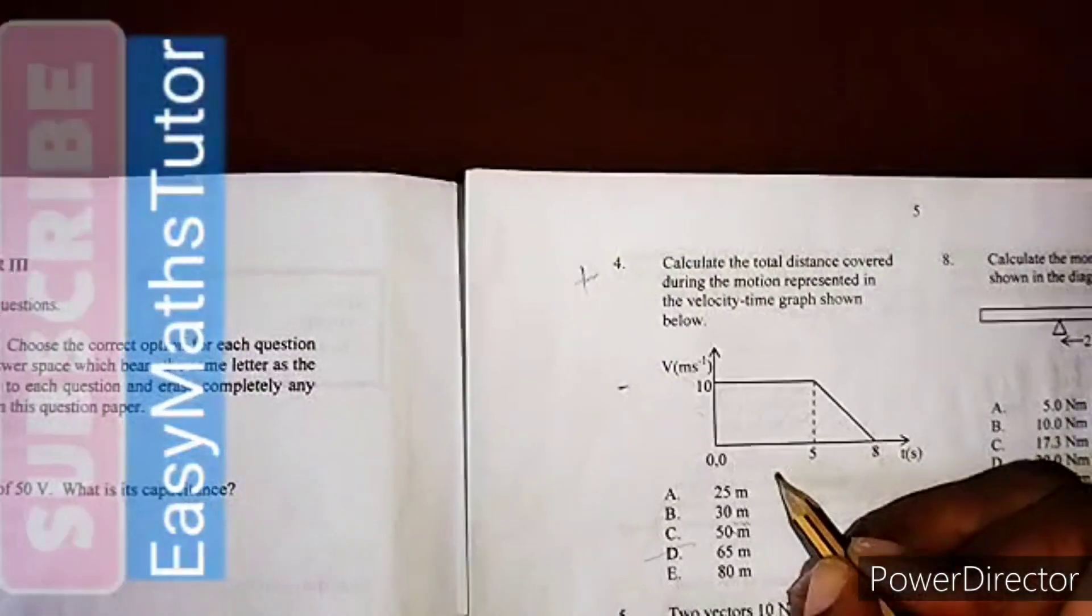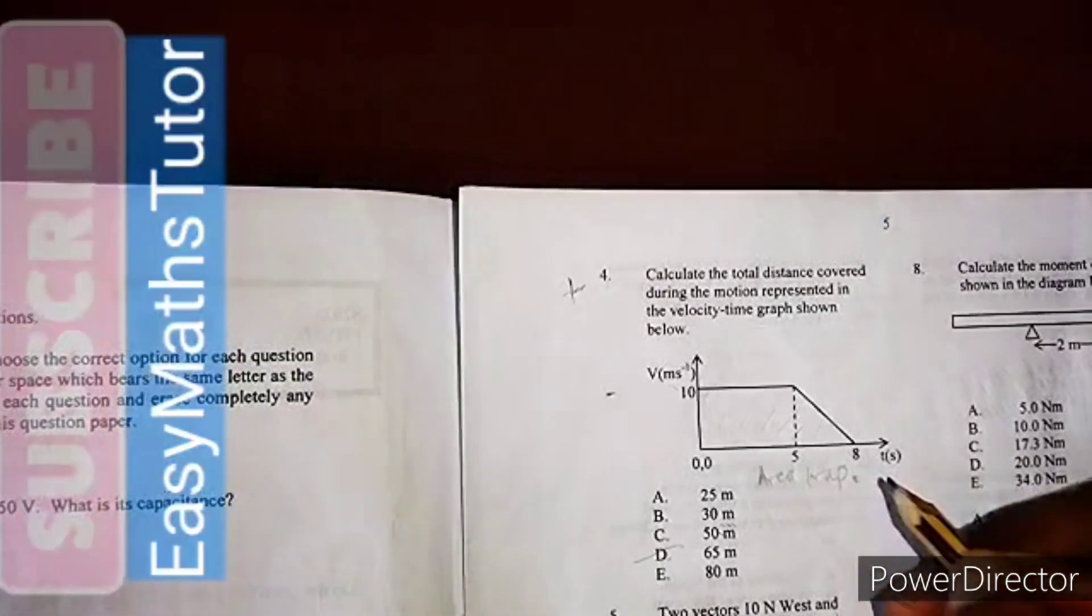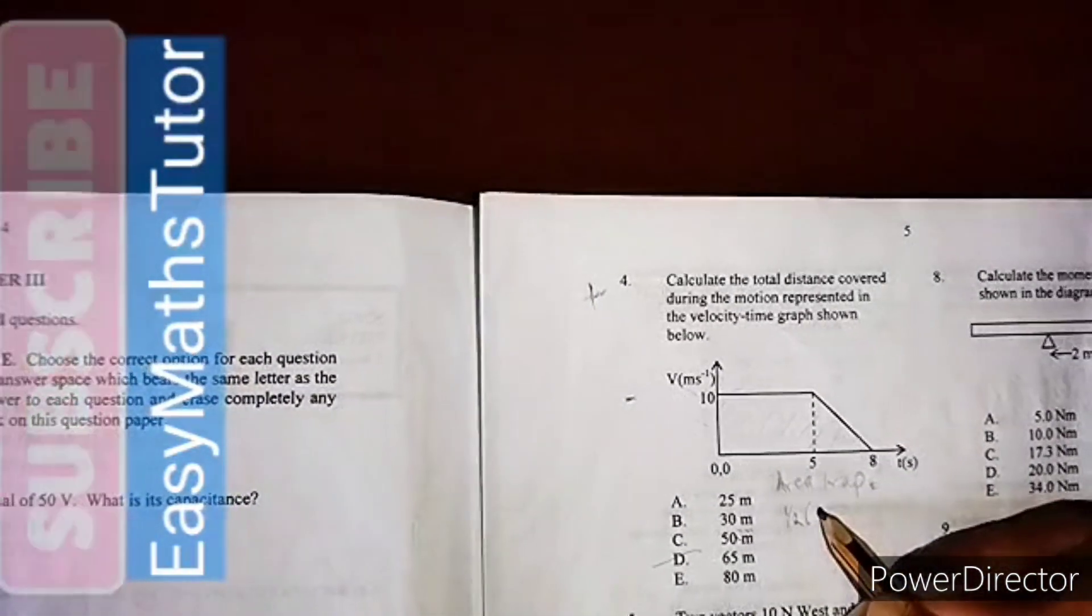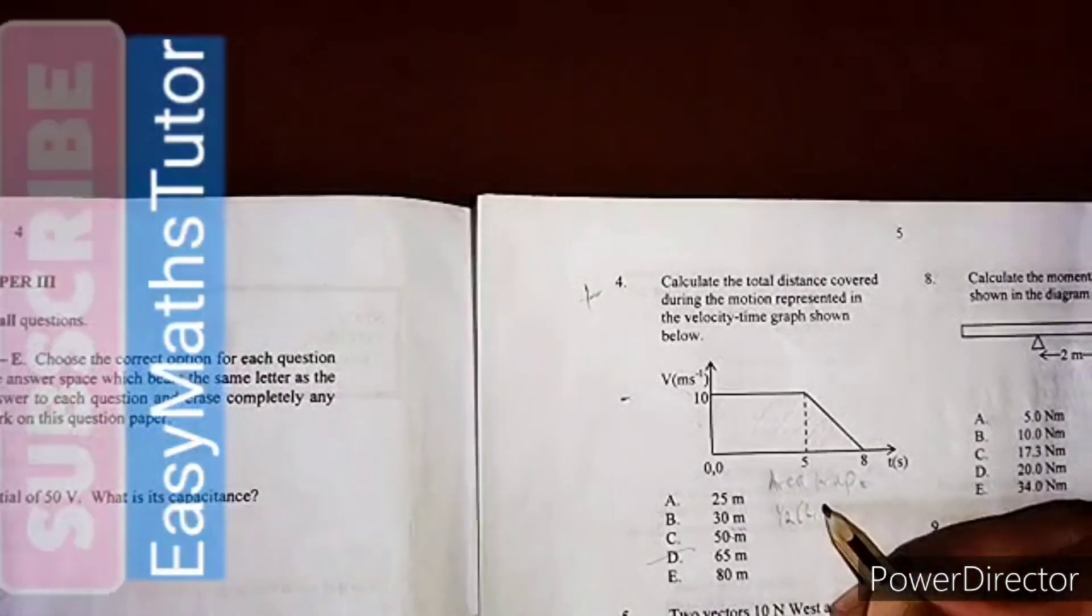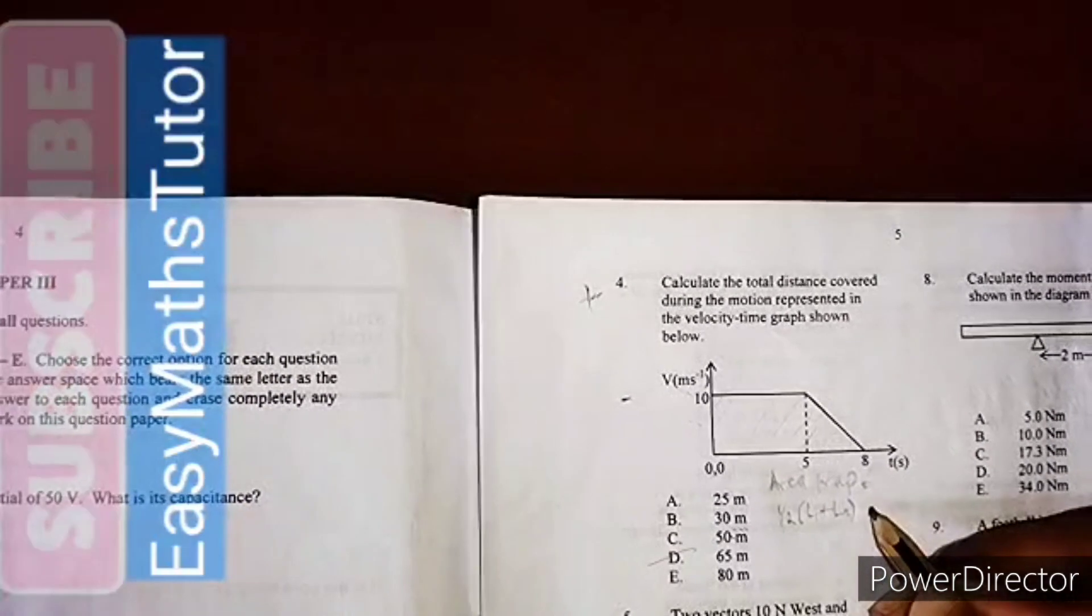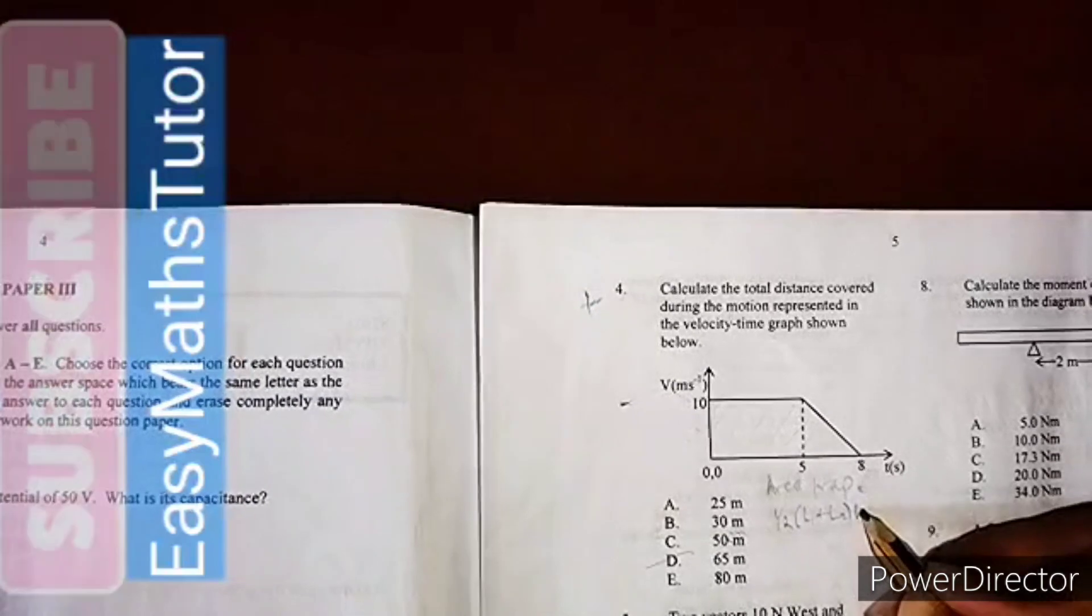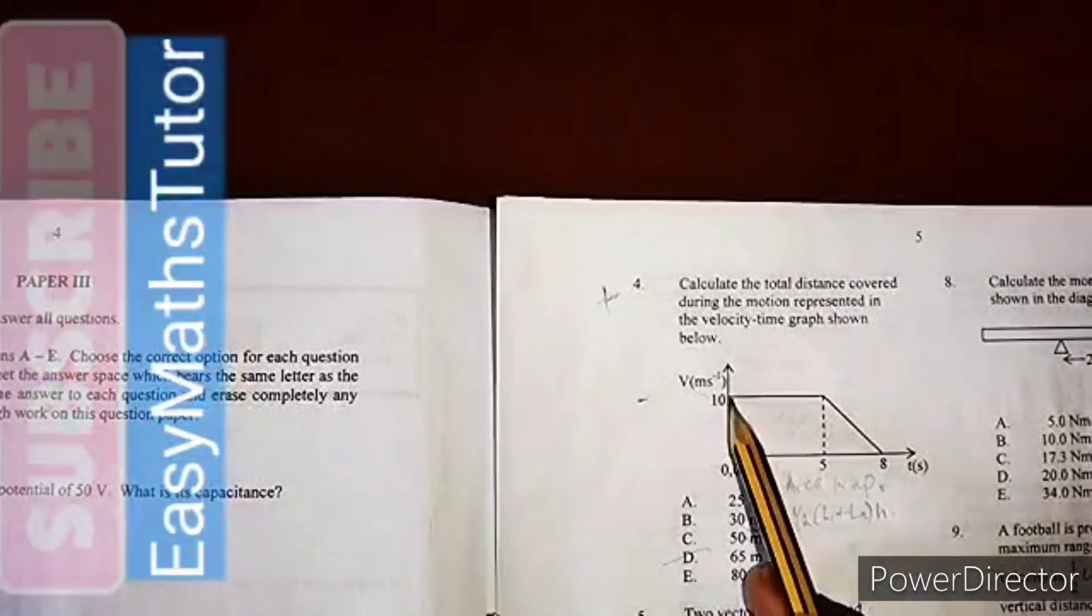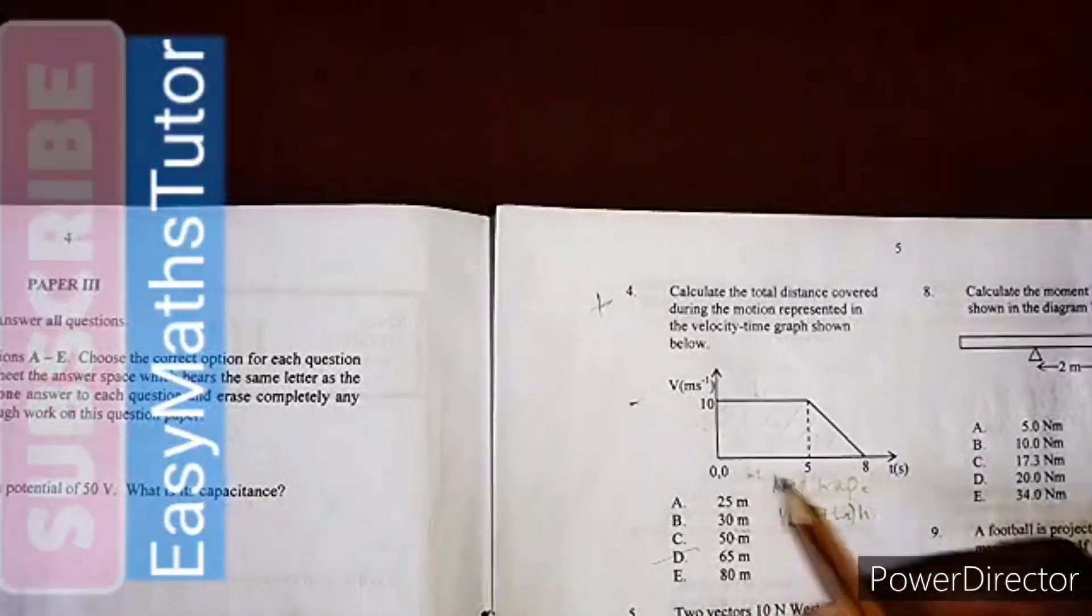We're asked to find the total distance covered. This object is actually a trapezium, so we're going to find the area of this trapezium. The area of a trapezium is equal to half of the two lengths, which is L1 plus L2, times the height.